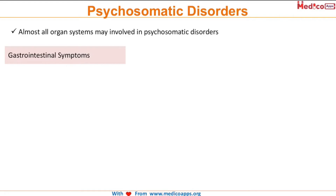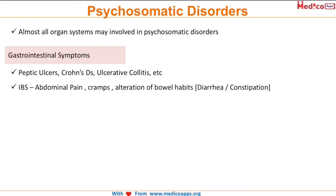Diseases like peptic ulcer, Crohn's disease, and ulcerative colitis are either caused or aggravated by stress. A classic example is IBS, or irritable bowel syndrome, which presents with abdominal pain, cramps, and alteration of bowel habits — alternating diarrhea or constipation.